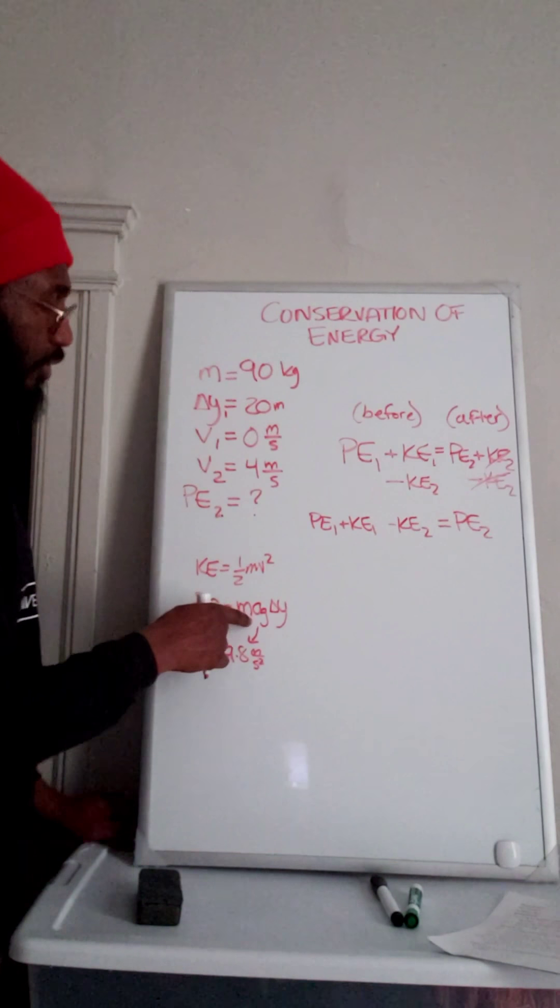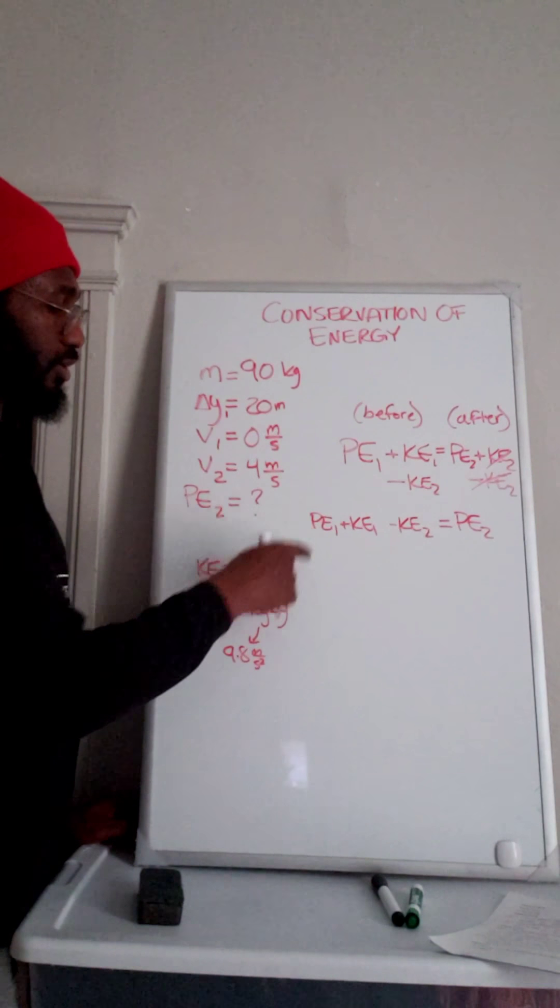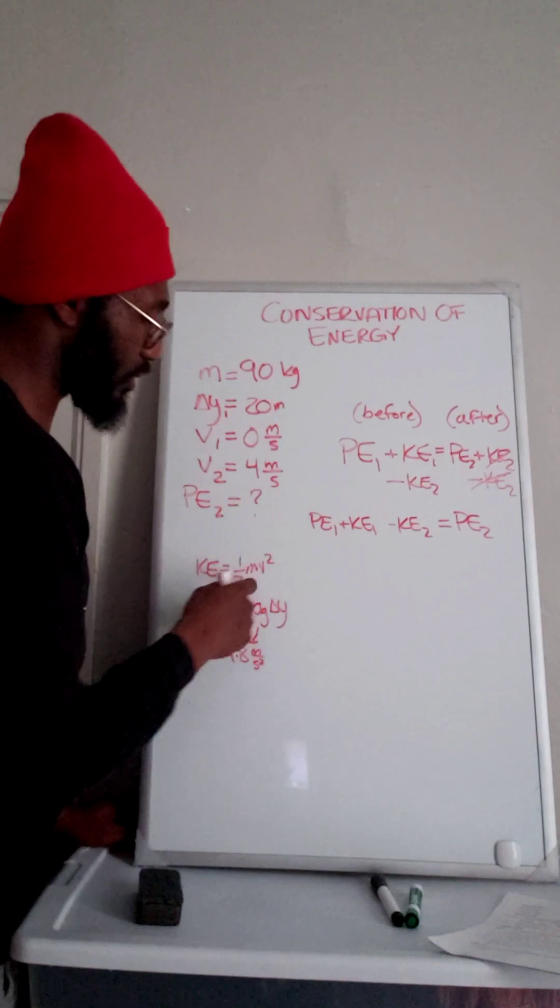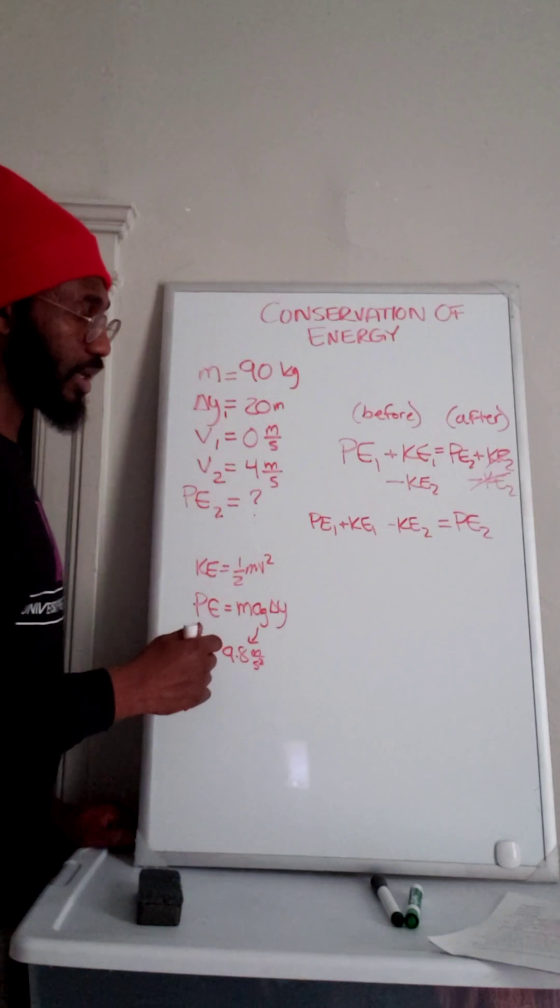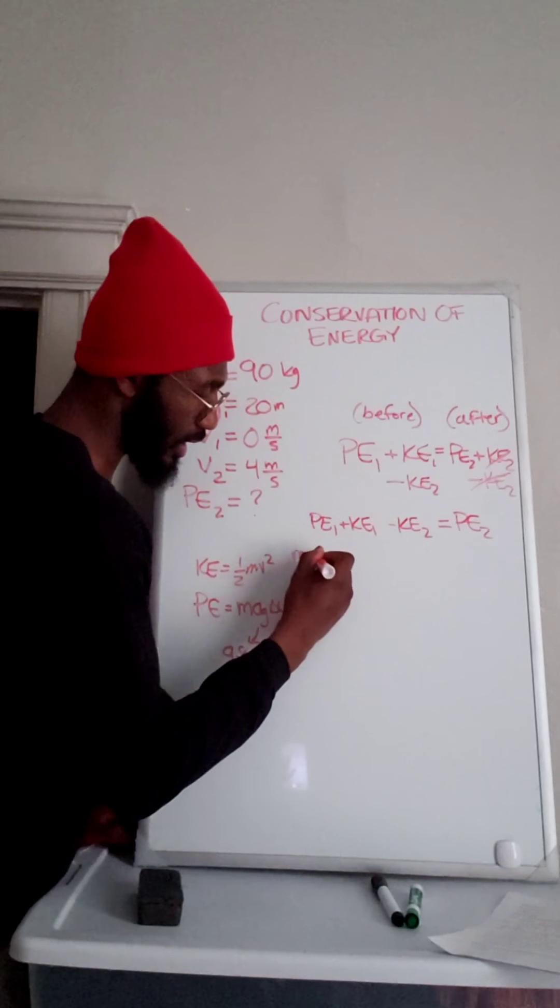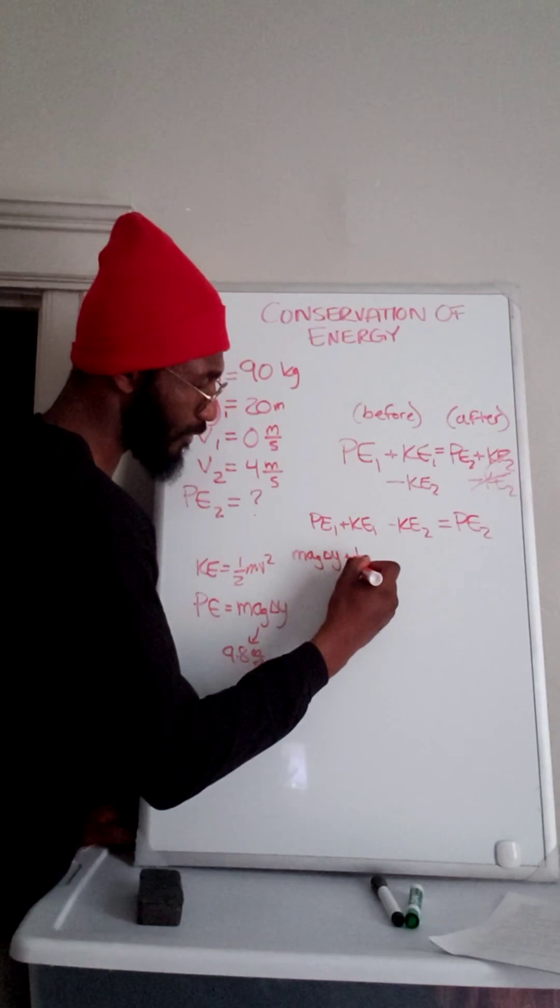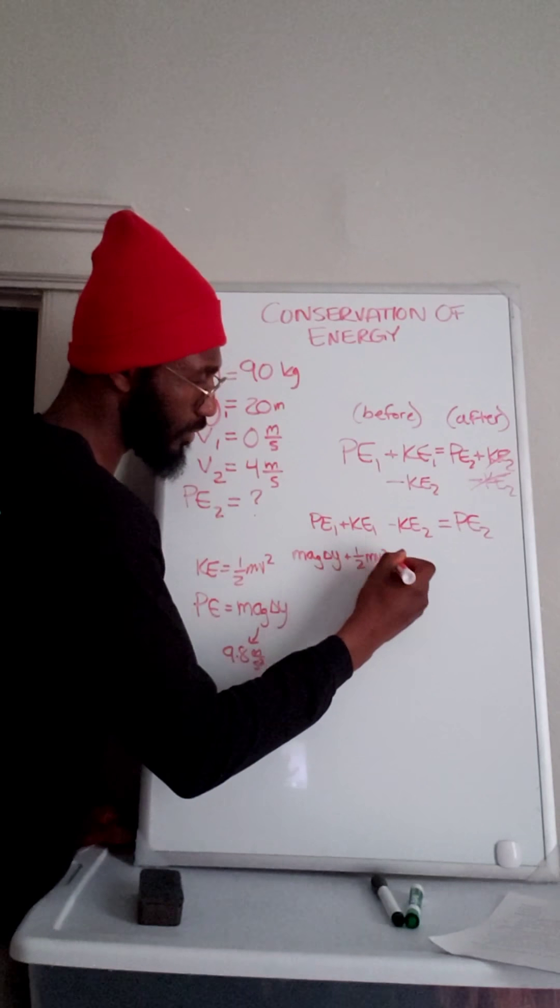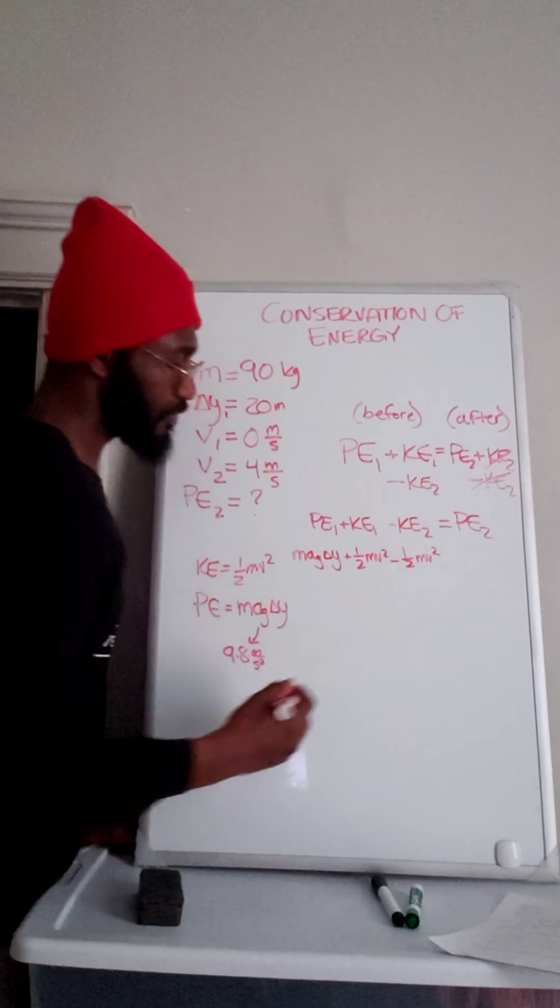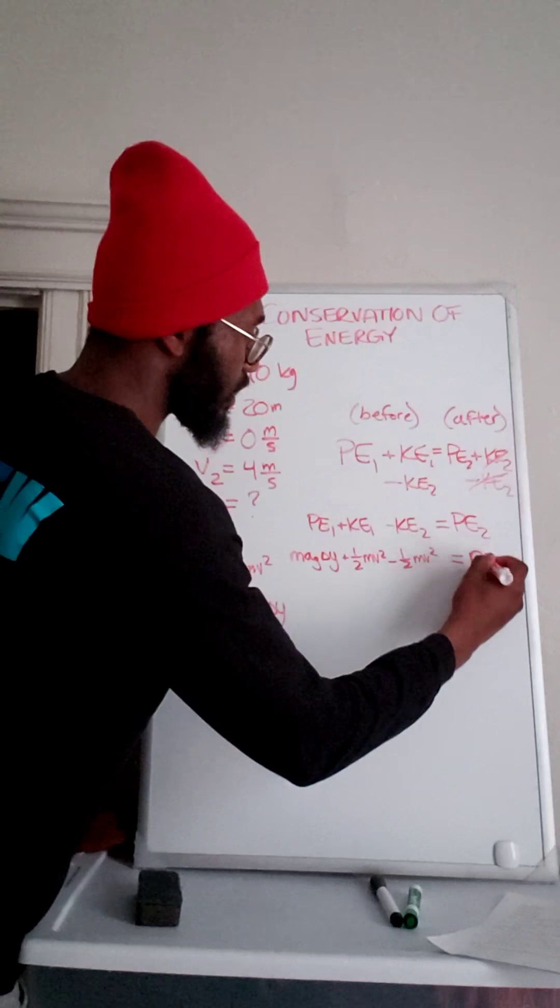Now, we know these equations, and we can plug in every time we see potential energy, we can plug in our potential energy equation. Every time we see kinetic energy, we can plug in our kinetic energy equation. So let's do that. We've got mag delta y plus one-half mv squared minus one-half mv squared. We're going to say that all equals PE2.